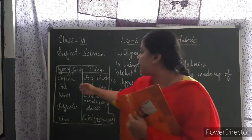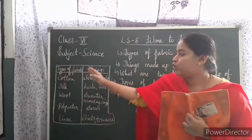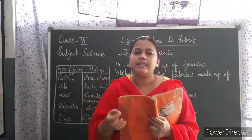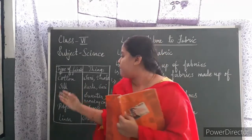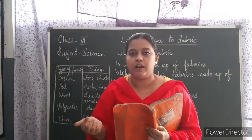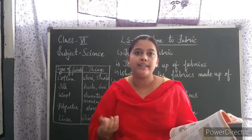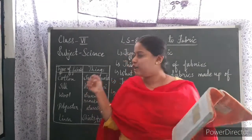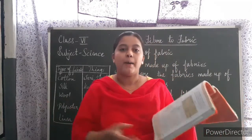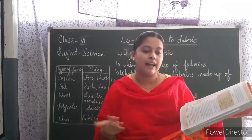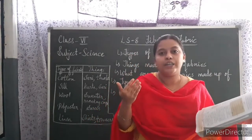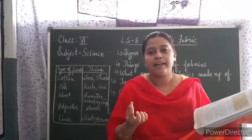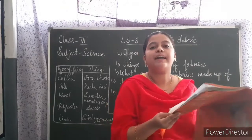Cotton fabric is much heavier compared to silk fibers. Silk fabrics are very light, whereas wool fabrics are much heavier. Corn fiber is a new innovation in the textile industries. Everyone knows silk is obtained from silkworms, but scientists have recently discovered that silk is also produced by spiders.